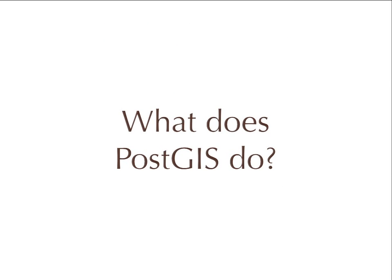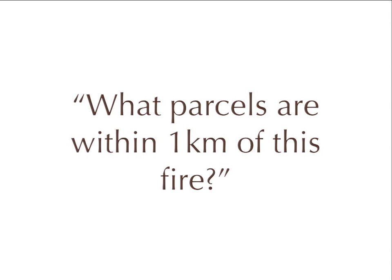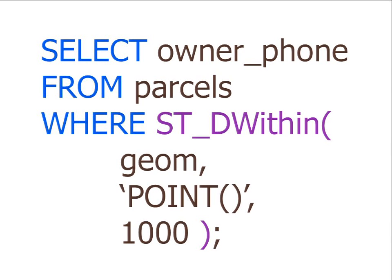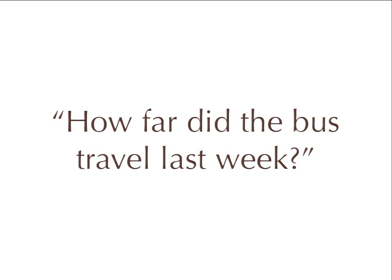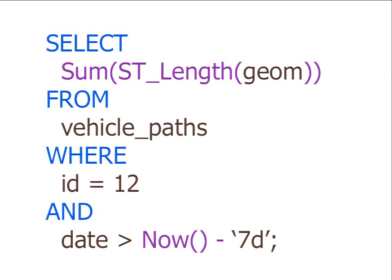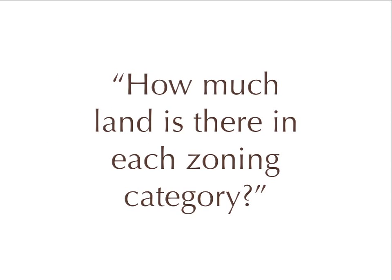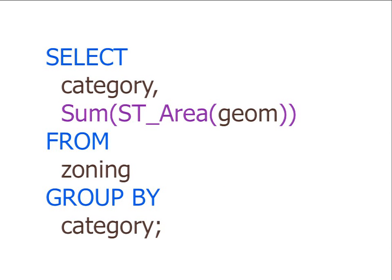What does it mean to have a spatial database? It means you can answer questions that would otherwise be very difficult. Like: what parcels are within a kilometer of this fire? That's a classic GIS question — you can answer it in one line of SQL. How far did the bus travel last week? One line of SQL: sum up all the lengths of the lines where the vehicle traveled since now minus seven days. Or: how much land is there in a given zoning category? Again, one line of SQL.